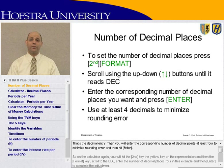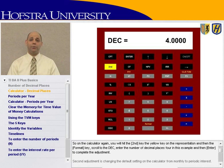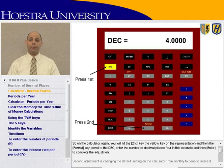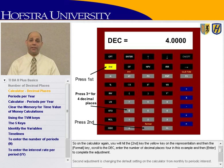On the calculator, again you will hit the Second key — that's the yellow key on the representation — and then Format, scroll to the decimal, enter the number of decimal places, four in this example, and then Enter to complete the adjustment.